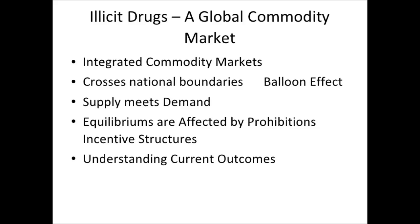Now, just to get into a broader conceptual way of looking at illicit drug markets: it is a global commodity market, with integrated markets around the world taking all sorts of different production and supply procedures — phenomenally complicated, crossing national boundaries. Everyone here has probably heard of the balloon effect — you push down a balloon in one area but it rises up in another. It's because it is an international commodity market. If there's a drought in Australia, the price of wheat goes up, and wheat farmers in England respond and plant wheat instead of corn. You can't push it down because it's an international market; you can only shift it around.